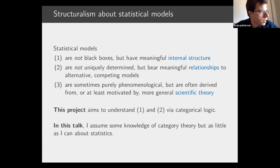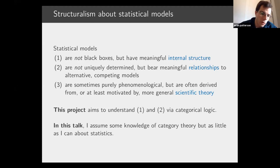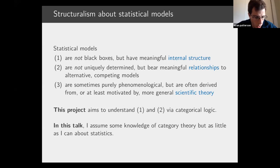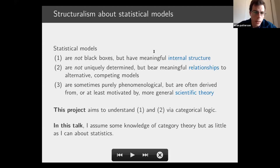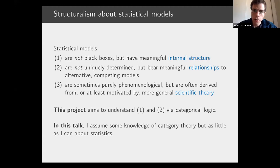Since this is the categorical probability and statistics workshop, I'm going to assume that you know some things about category theory, but I'm not going to assume a whole lot about statistics. So you're coming from the opposite direction. Hopefully you can still take something away from it, but not everything will necessarily make complete sense. Happy to take questions at the end and in the Zulip.